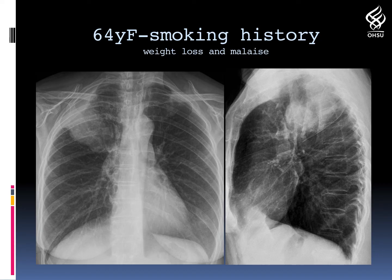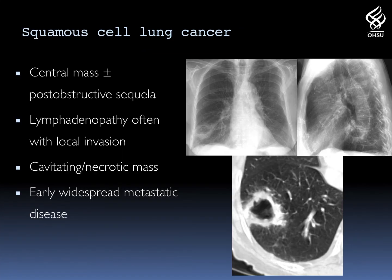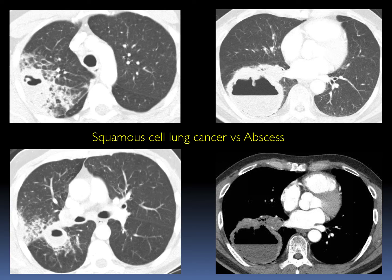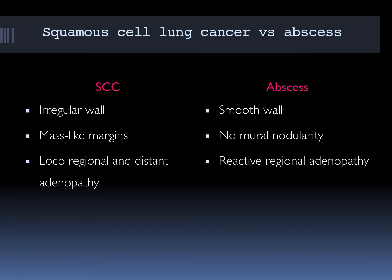This is a 60-year-old female with smoking history, weight loss, and malaise. You can see an opacity obscuring the right lateral chest wall, and on the lateral radiograph a dense mass within the right posterior upper lobe. This is a large central mass with post-obstructive sequela. Often there is lymphadenopathy and early widespread metastatic disease. One of these patients has a squamous cell carcinoma and one has abscesses — how do we differentiate them? Squamous cell lung cancers tend to have irregular walls, mass-like margins, and often local, regional, and distant adenopathy at time of presentation. Abscesses tend to have a smooth wall, often no mural nodularity, and only reactive regional adenopathy.